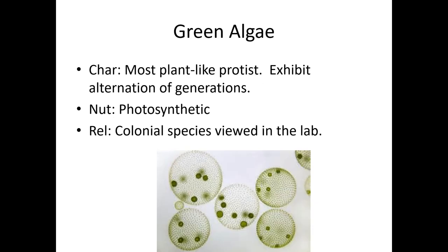Green algae is actually the most plant-like protist because it exhibits a life cycle change like plants do — that's called alternation of generations. The example we usually show in lab for this is volvox. Volvox looks kind of like fireworks blowing up when you look at it under the microscope. You can get them live and watch them swimming around — they're really clumsy as they swim. All of these are colonial protists: each ball is made out of multiple cells, but there's no specialization, so all those cells basically work the same. The little things inside are baby colonies that are going to bud off the adult — this is their form of asexual reproduction.